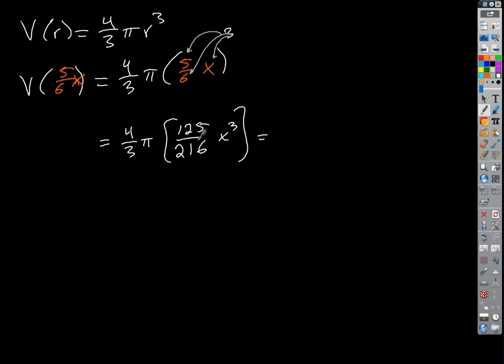Let's deal with the numbers. Is 125 divisible by 3? No. There's a trick: if you add up the digits of the number and the result is divisible by 3, then the number is divisible by 3. In this case, 1+2+5 = 8. Is 8 divisible by 3? No. So 125 is not. How about 4 and 216? Does that reduce? Yes — 4 goes into 216, which gives us 1 over 54.